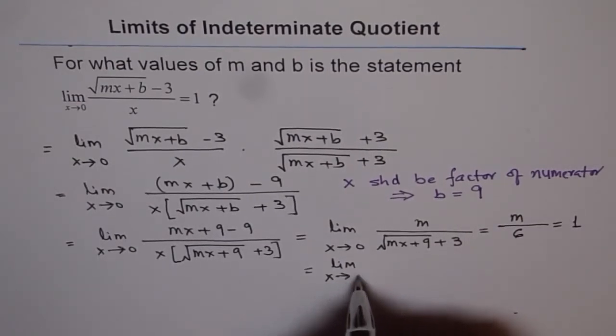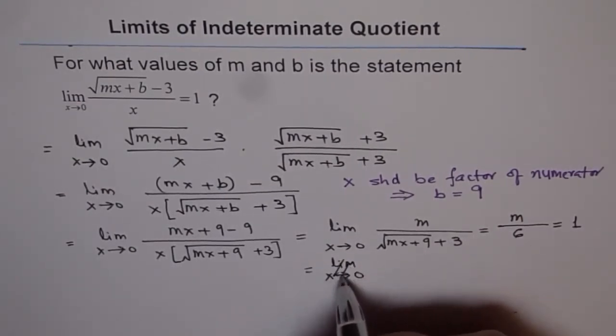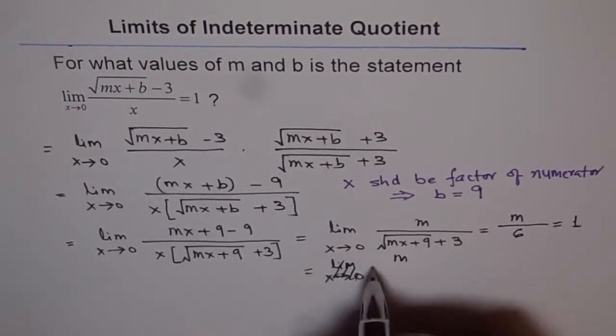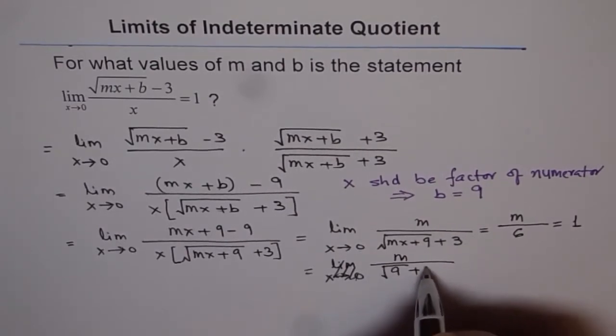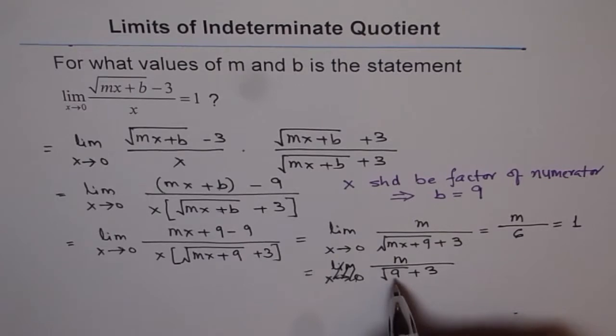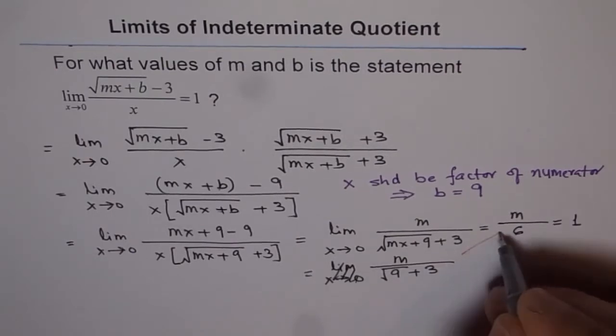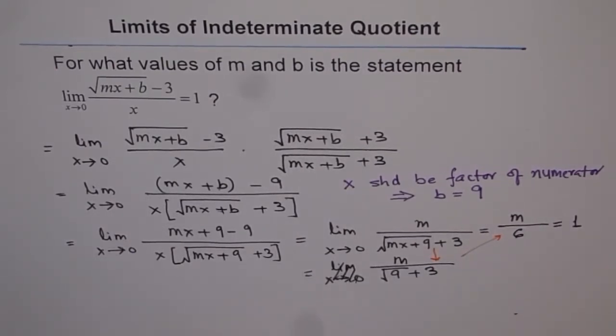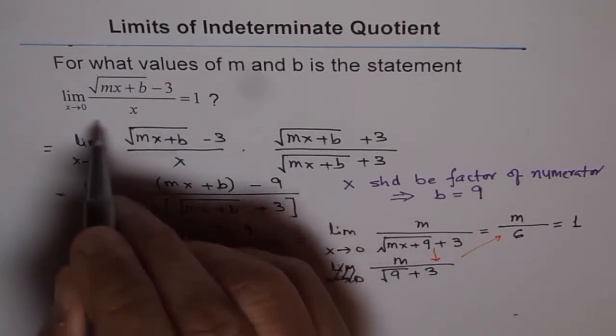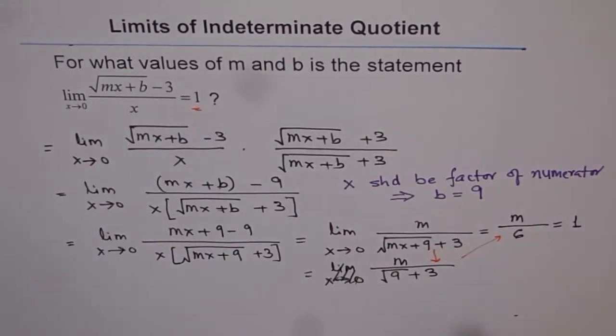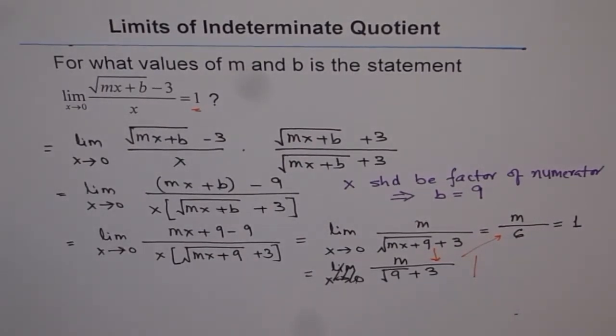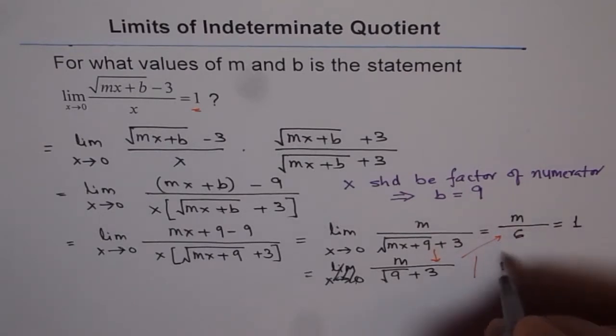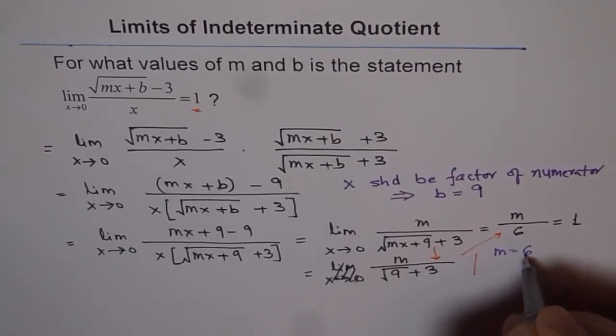So we get limit x approaches 0, m over, when I substitute 0, I get square root of 9 plus 3. Now, square root of 9 is 3. So 3 plus 3 is 6. And that is how we get to this step. So I'm just giving you this step so that it's clear to you what we did. And it is known to us that the limit is 1 for this function. So we equate to 1. And once we do that, we know the value of m. And from here, we can say, now we know m is equals to 6 times 1. That is 6.